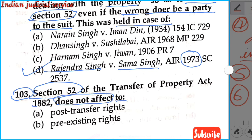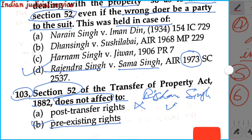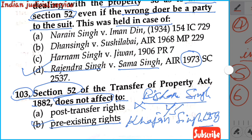Question number 103: Section 52 of the Transfer of Property Act does not affect — option A: post-transfer rights (it directly affects these, so it is wrong); option B: pre-existing rights — yes, section 52 does not affect pre-existing rights. Our answer is option B. This is provided in the case of Bishan Singh versus Khajan Singh, AIR 1958, in which the Supreme Court held that the Transfer of Property Act does not affect pre-existing rights.